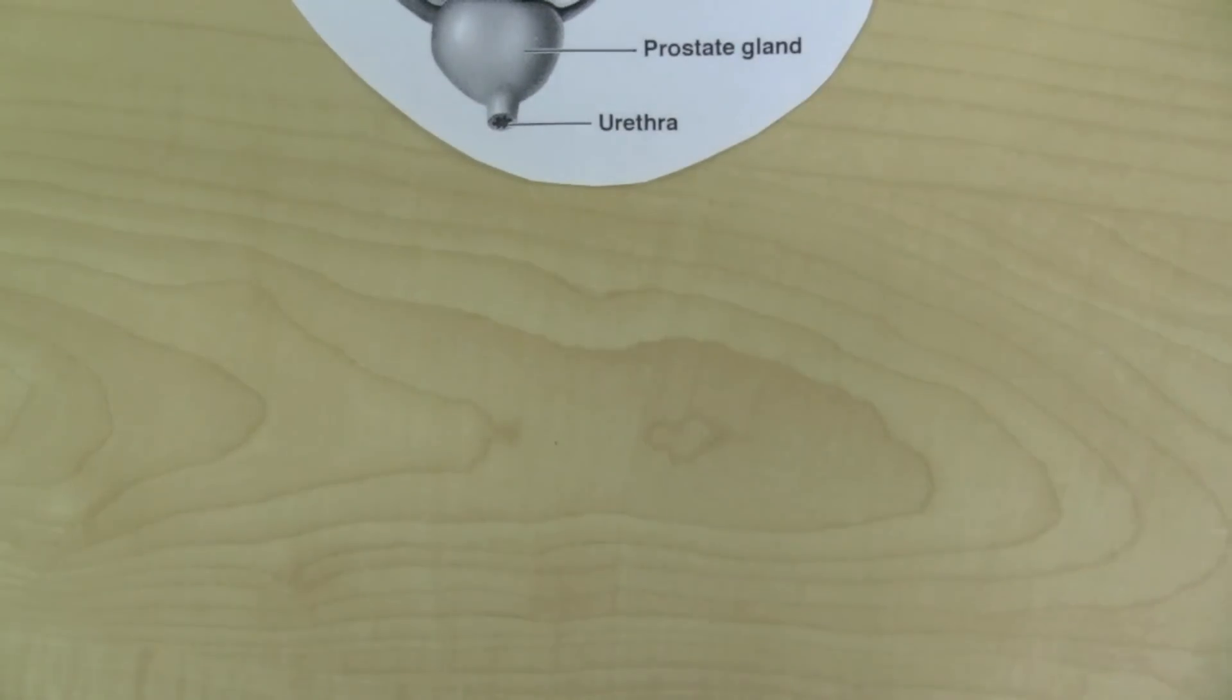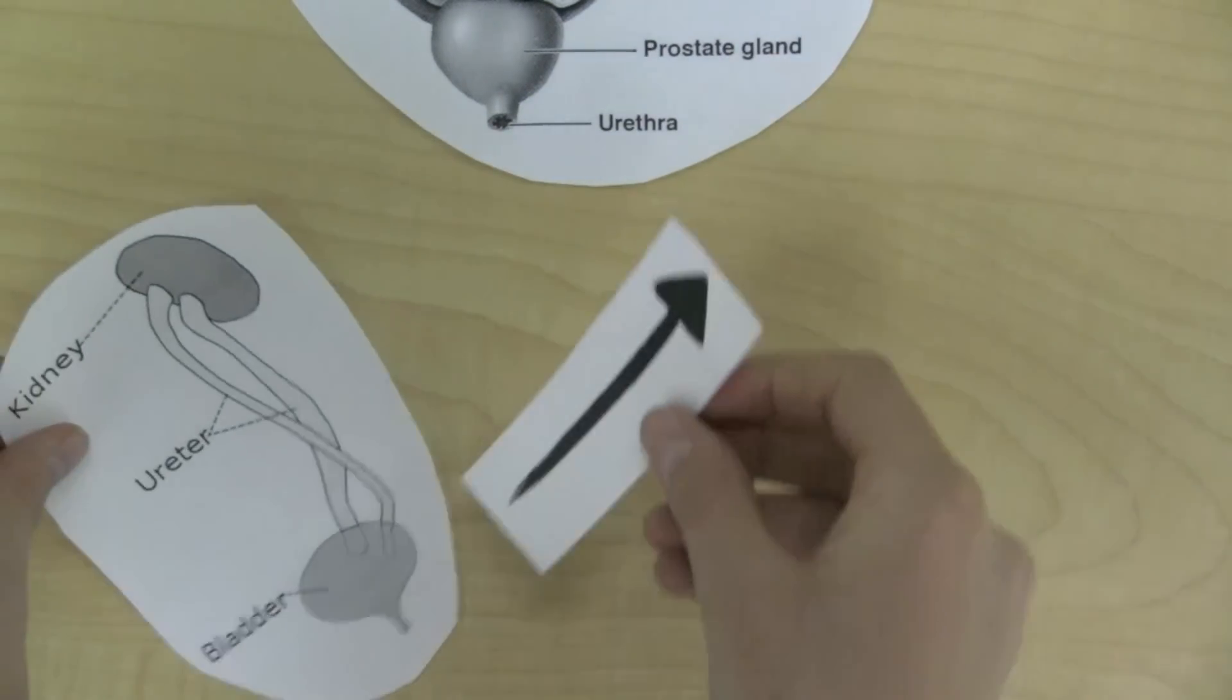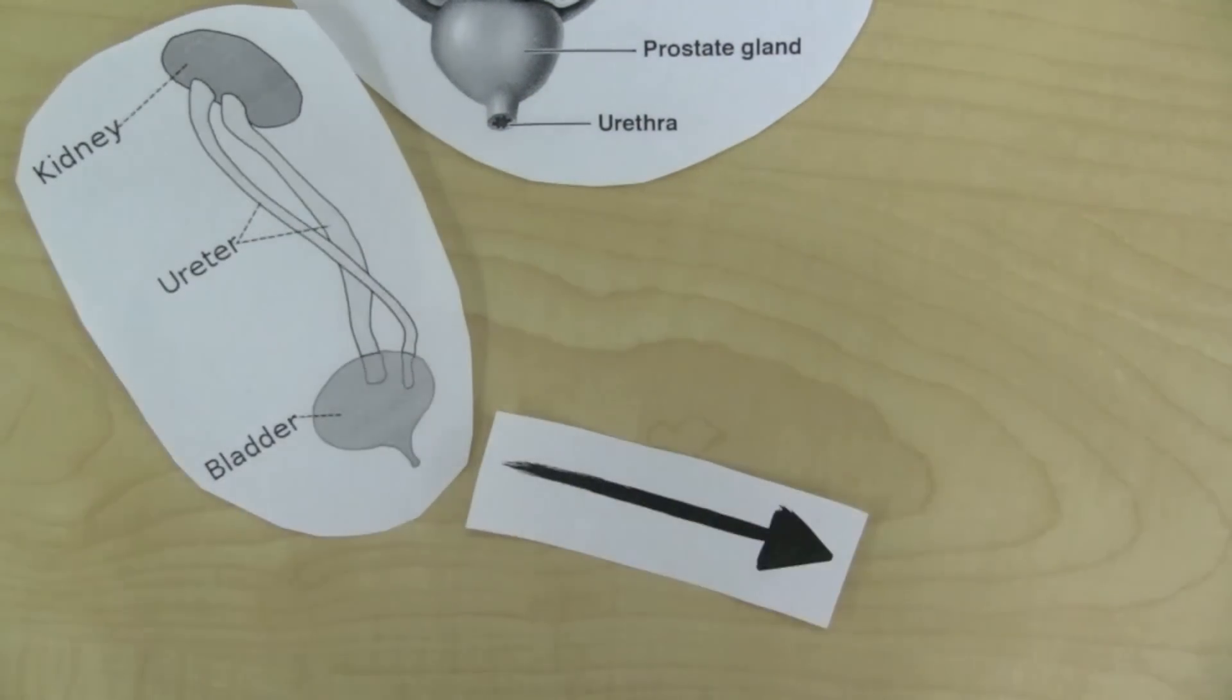The urethra is a small tube that allows urine to pass from the bladder to the genitals so that the urine can leave the body. Without the urethra, all of the urine in our body would build up and we would have no way to get rid of it.